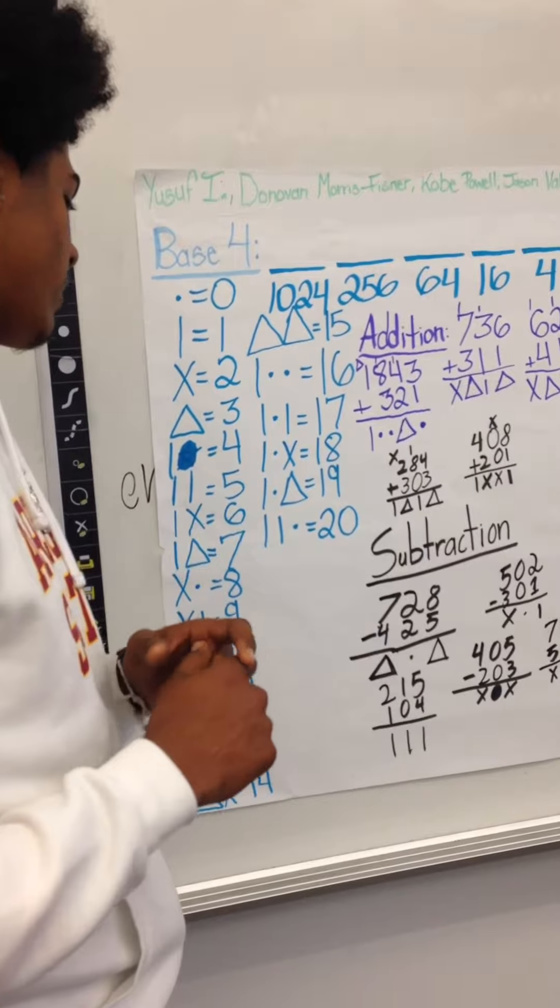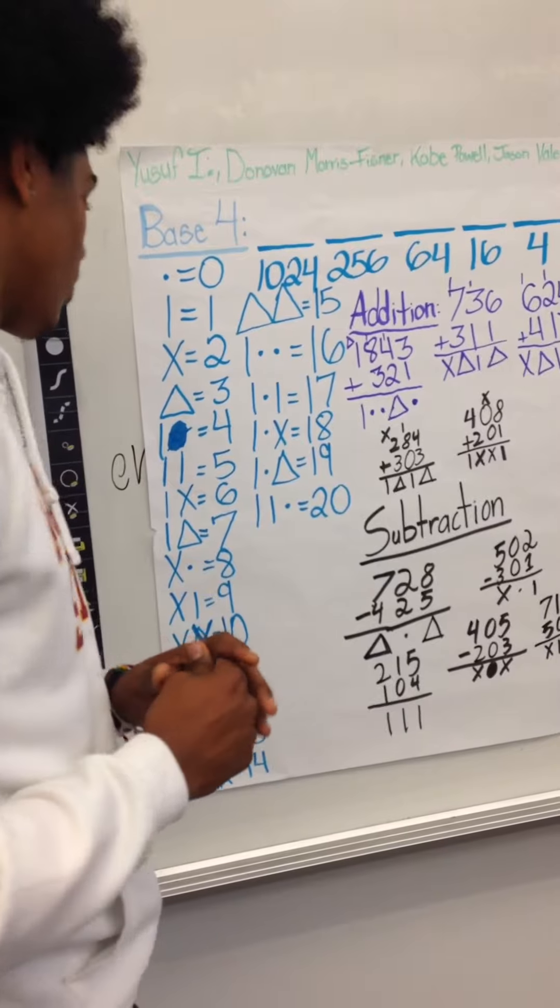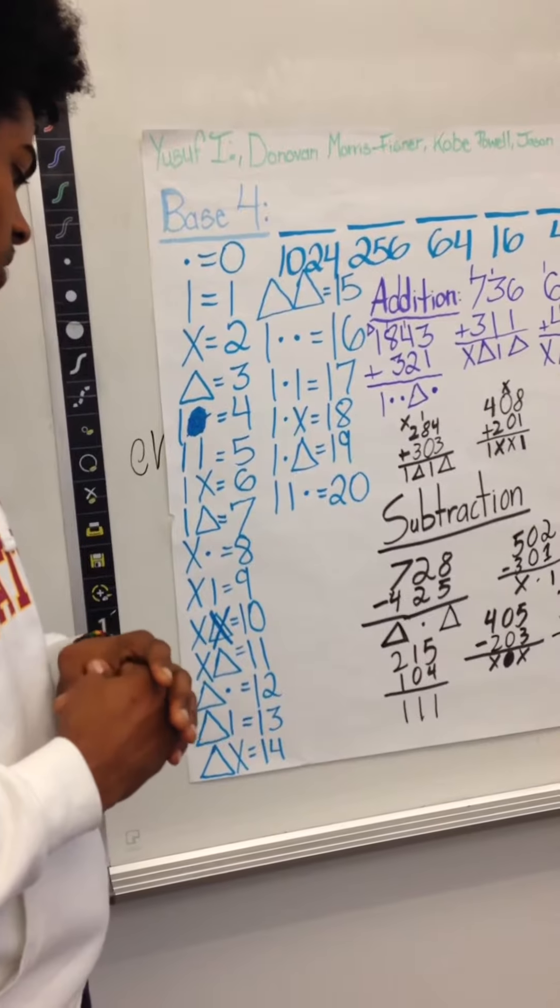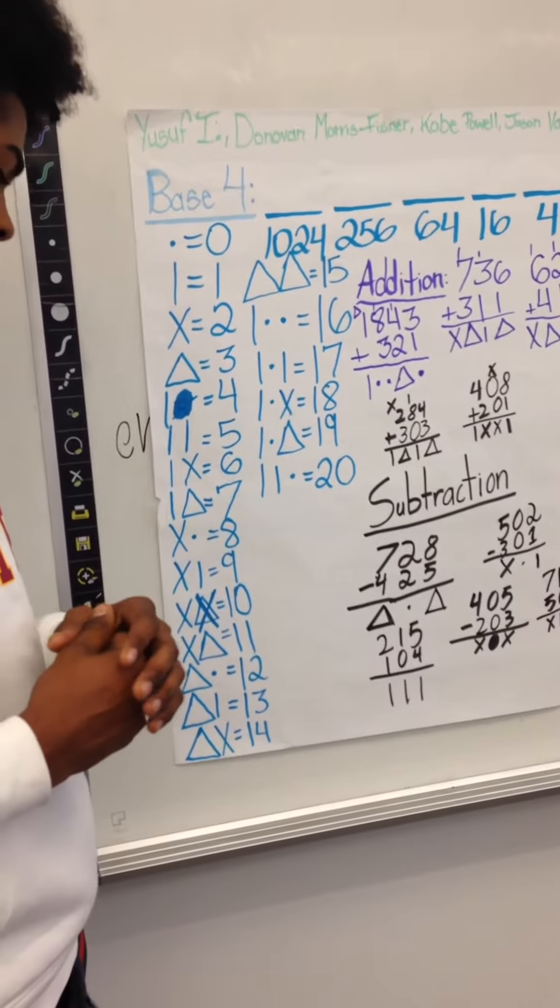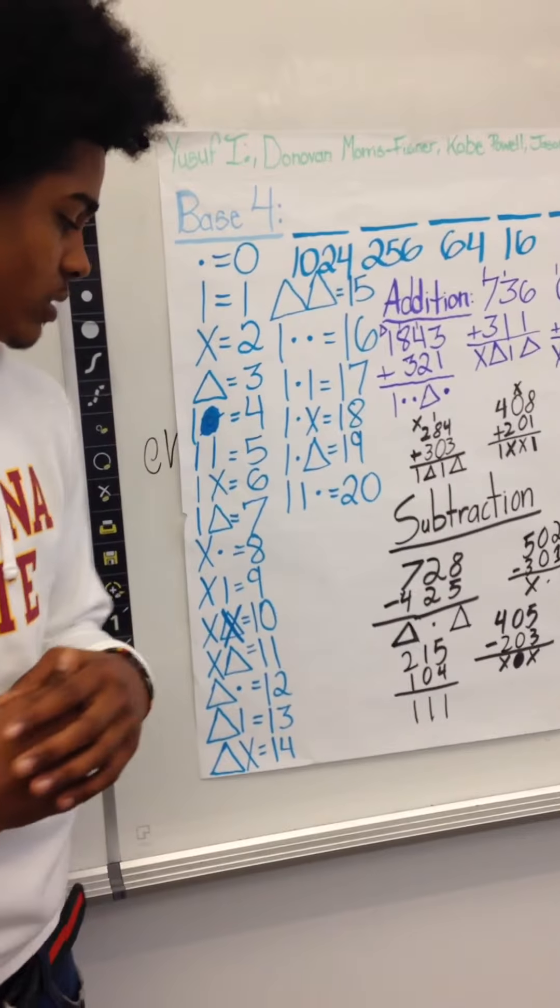One one equals five, one x equals six, I'll go up to nine. One triangle equals seven, x dot equals eight, x one equals nine, double x equals ten, x triangle equals eleven, triangle dot equals twelve, triangle one equals thirteen, and triangle x equals fourteen.